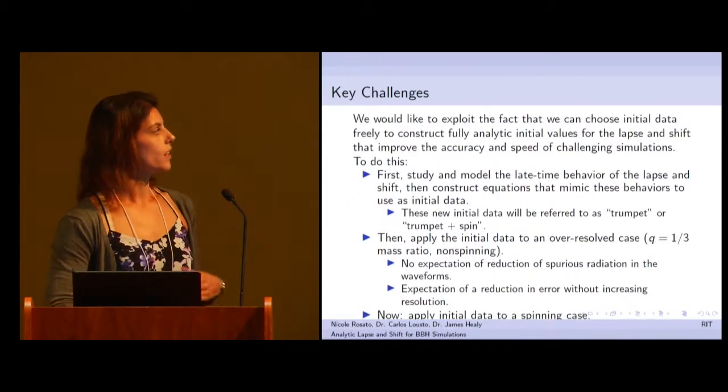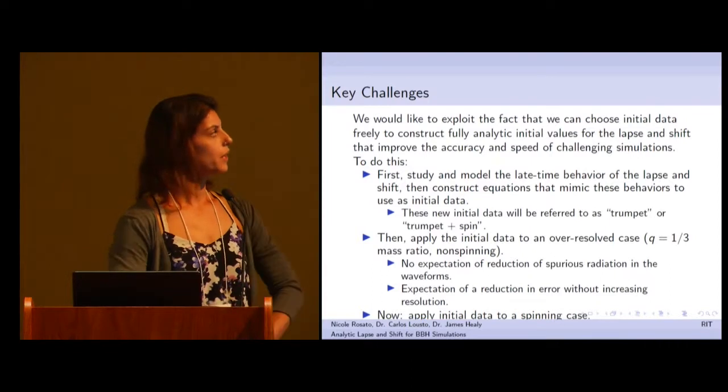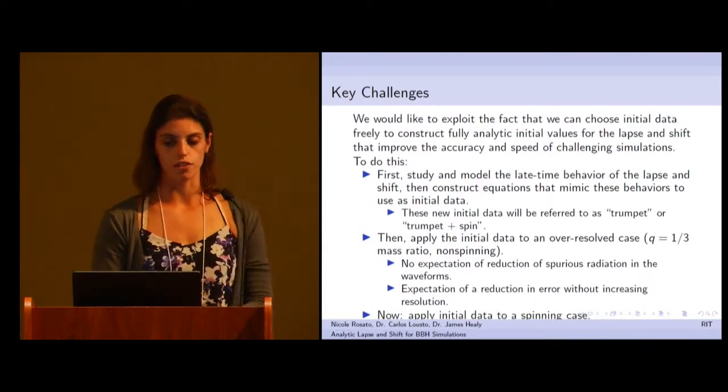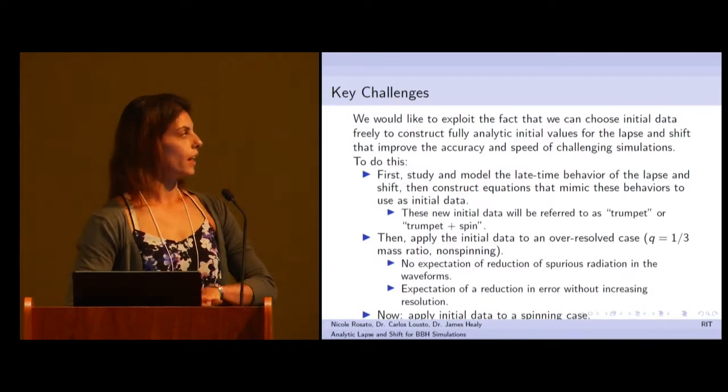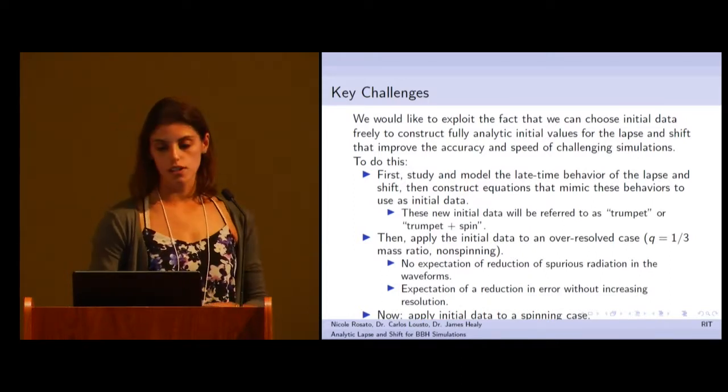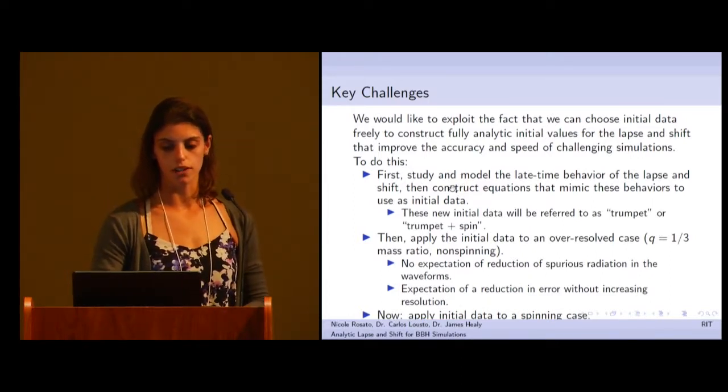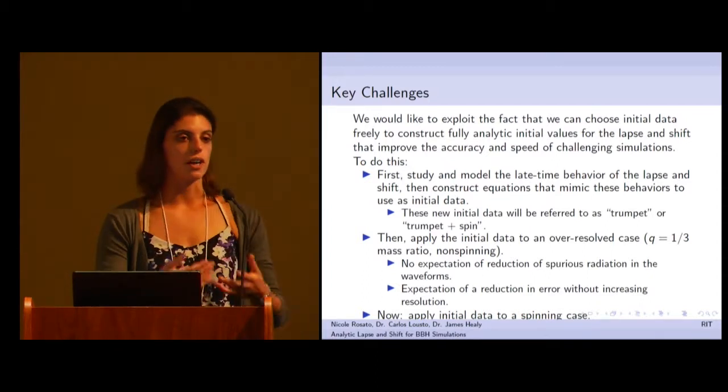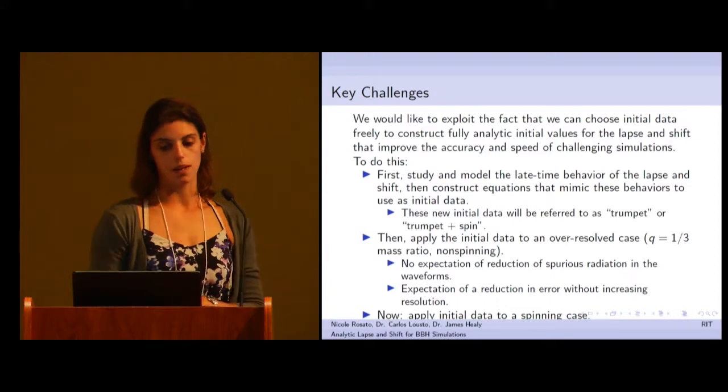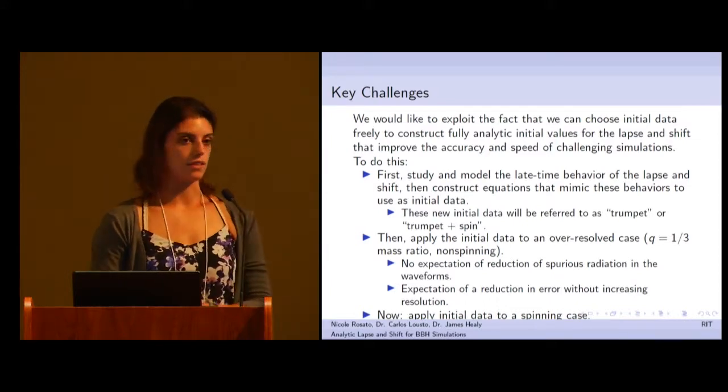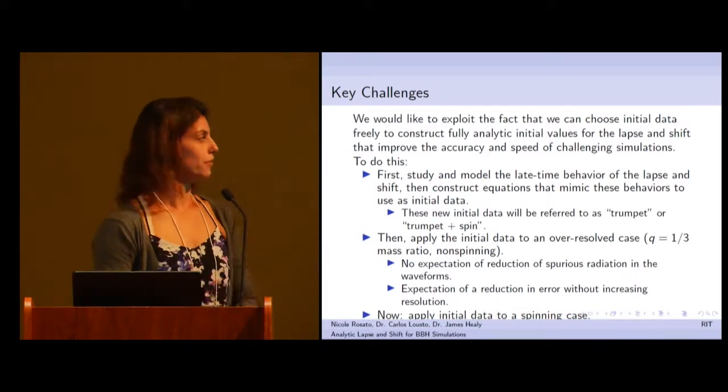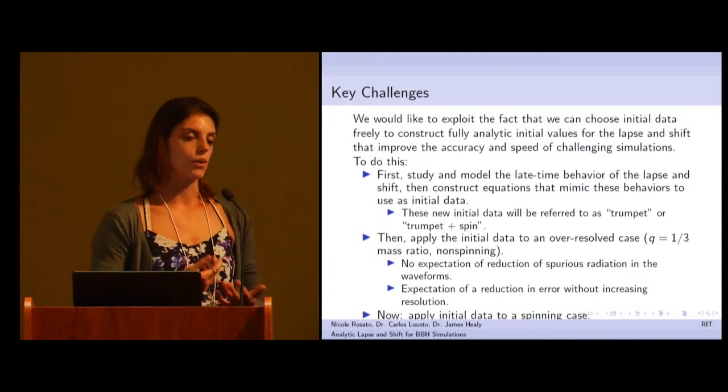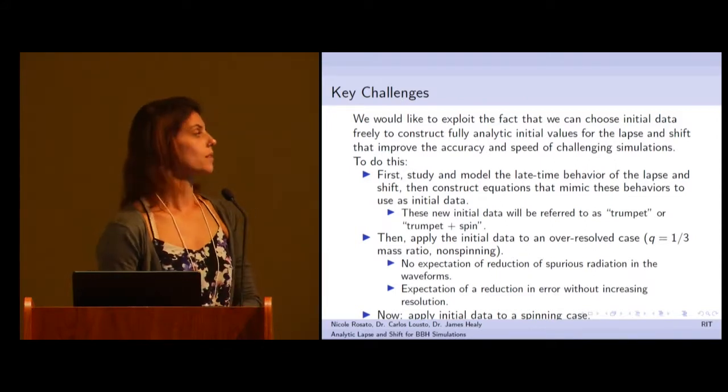So what are some key challenges? We want to exploit the fact that we can just choose this initial data freely and construct these analytic initial values. First, we studied and modeled the late time behavior of the lapse and the shift to construct modeling equations that mimic the behavior of these values after some time evolution. I'll refer to these new initial data as trumpet or trumpet plus spin if I'm including the spin correction.